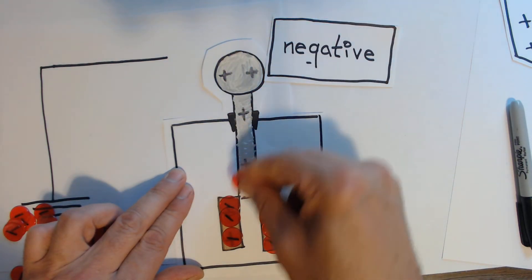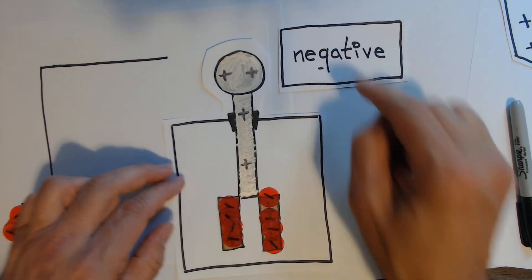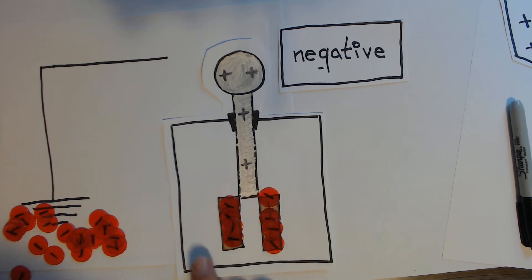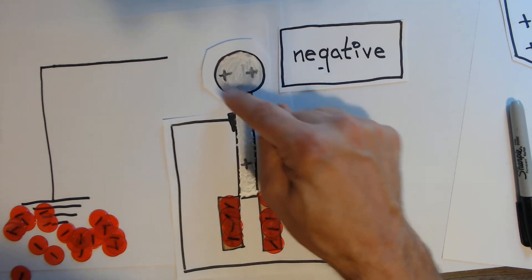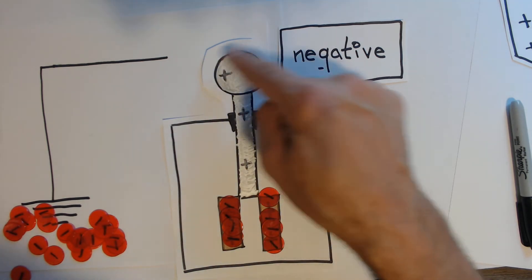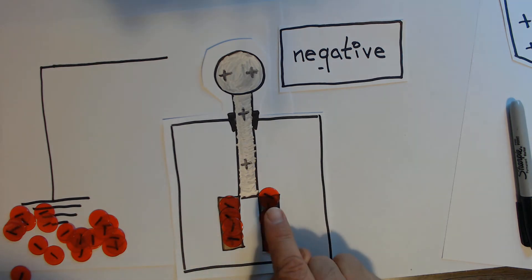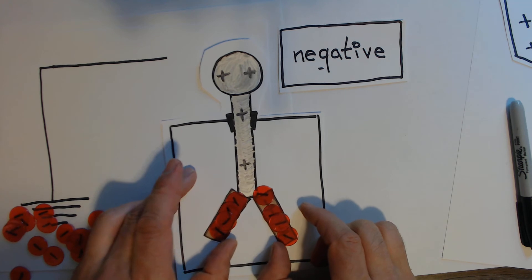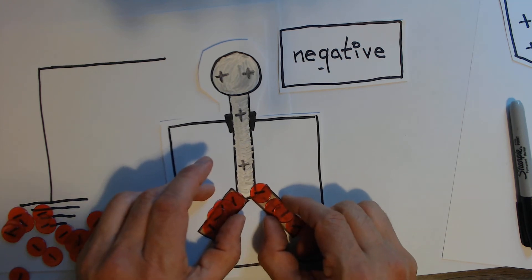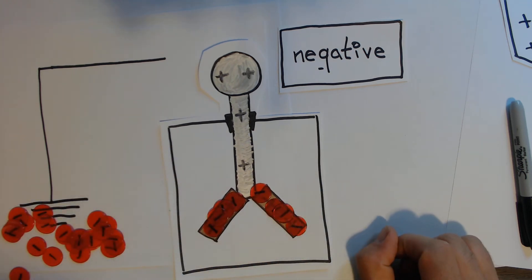Now here what you're going to see in the electroscope is this side is now locally negative, this side is now locally positive, because this has no electrons, this has a bunch. Now this and this are both negative, so like charges repel, and the light leaves will repel each other.